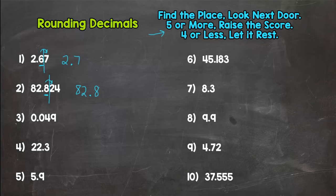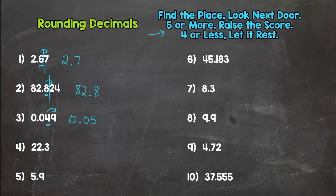For number three, let's round to the hundredths place. We look at the four, look next door, and we round up — this is closer to five hundredths than it is to four hundredths. We cut it off at the hundredths place.